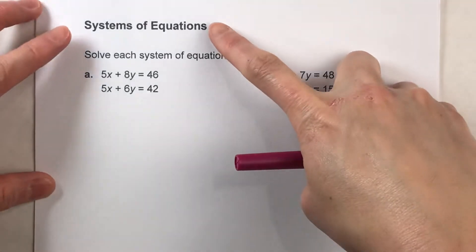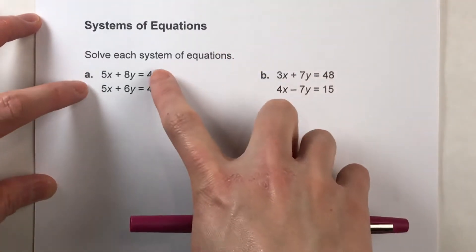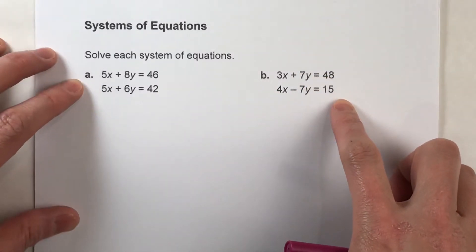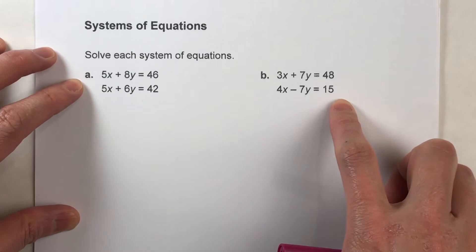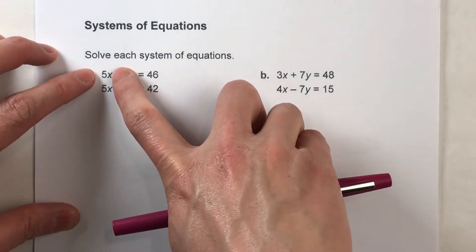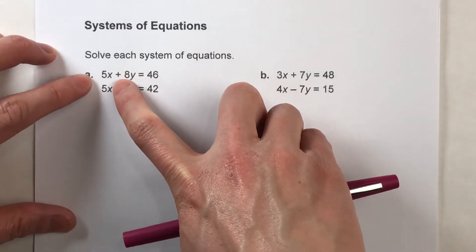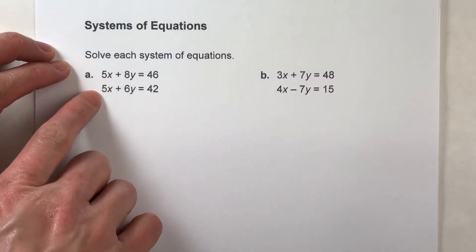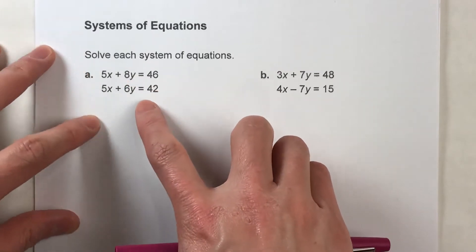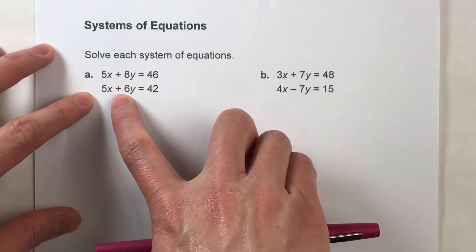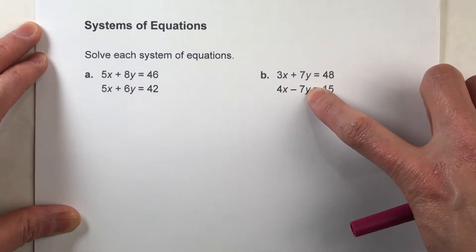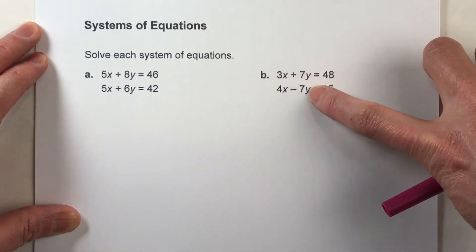Okay, so today we are going to be solving systems of equations when both equations are in standard form. And more specifically, this method I'm going to show you only works when the x's have the exact same coefficient. In other words, the number in front of the x's match up, or the numbers in front of the y's match up. In this case right here, the x's match up. Over here, the numbers in front of the y's match up, or if one's positive and one's negative, but the number in front of them is still the same.